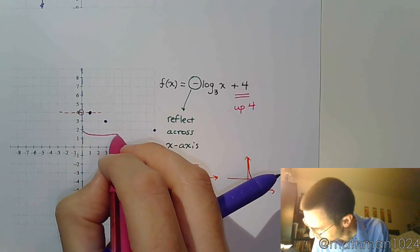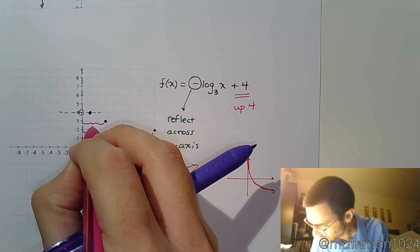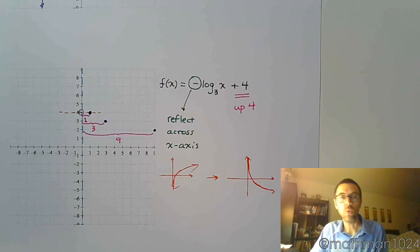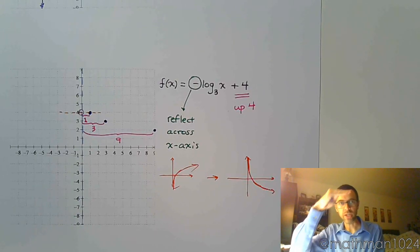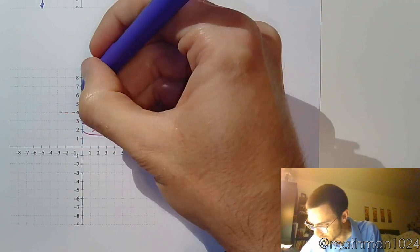So if you check this out, this is 9, that's 3, and that's 1. So you see the division by 3 as I go up. If I divide by 3 again, I'm going to have 1/3, 1/9.